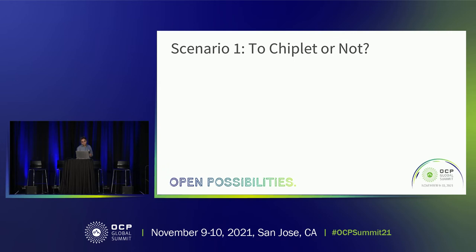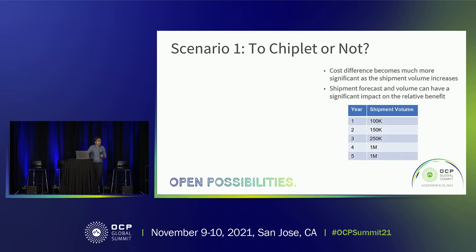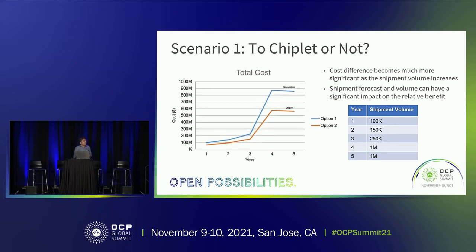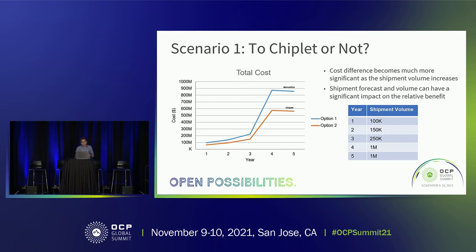What if we include the effect of shipment volume? If you have annual shipments of 100K versus a million units by year five, the graph shows the benefit of chiplets grows as volume increases. If you're shipping only 100,000 units a year, the benefit of chiplets may not be worth the complexity. But at a million units, the difference becomes significant. Shipment volume must be taken into account alongside all other variables.